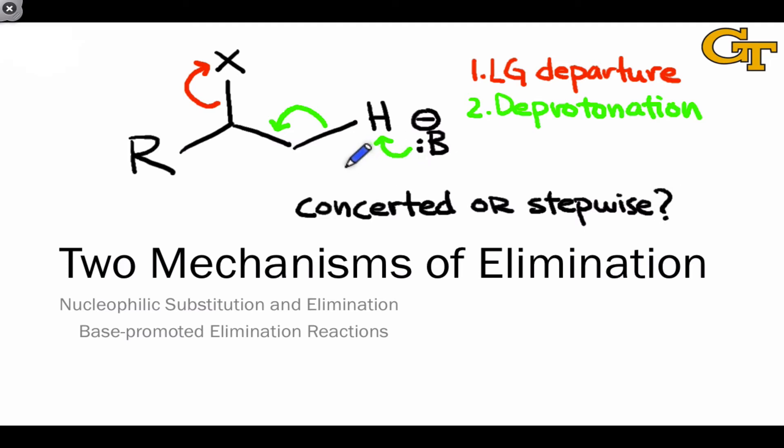The concerted process, by analogy to the SN2 reaction, is called E2. It's a bimolecular elimination process. The stepwise process is unimolecular and is called E1, in fact, for the exact same reason that SN1 is called SN1, as we'll see.